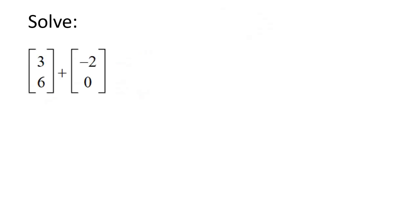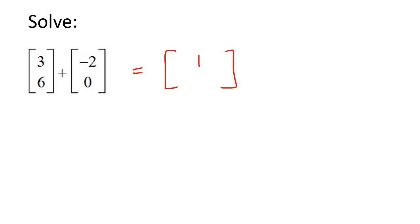It's pretty straightforward. What you do is you take this number and just add it to this number, and your answer will go in a matrix. So 3 plus negative 2 is 1. Then you do the next part: 6 plus 0 is 6. Yes, that's how you add matrices.